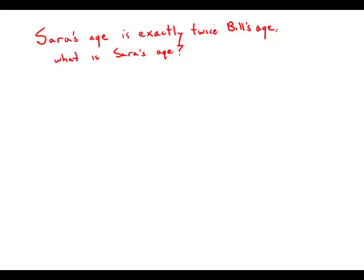If Sarah's age is exactly twice Bill's age, what is Sarah's age? I'm going to use S for Sarah's age, B for Bill's age. If Sarah's age is exactly twice Bill's age, that means S equals 2B.